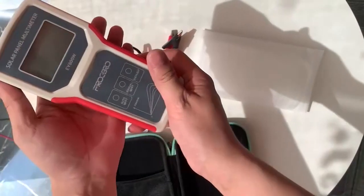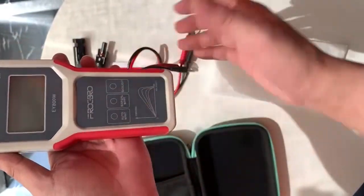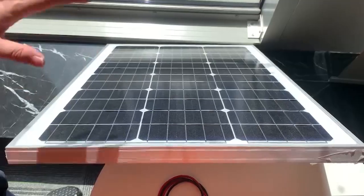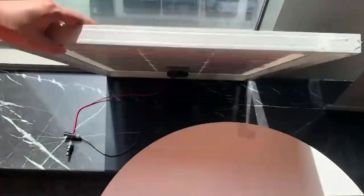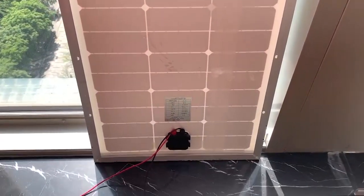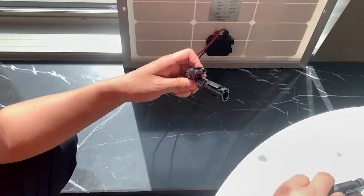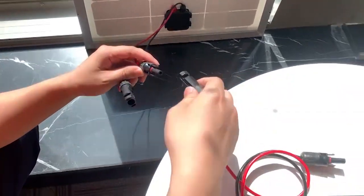This is our EY800W model. Okay, this is our solar panel. We have MC4 connector right here, so we can use this MC4 cable to connect it directly.